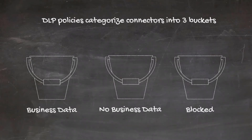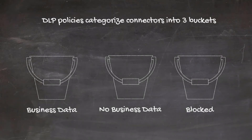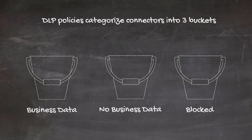The no business data category often refers to things like Twitter, Dropbox, and so forth. An organization could have a policy that they don't use Dropbox, and in that case they would place it in the blocked bucket. By placing it in the blocked bucket, that connector would not be available to be used in any apps or flows regardless of the other connectors you use — it's always blocked.